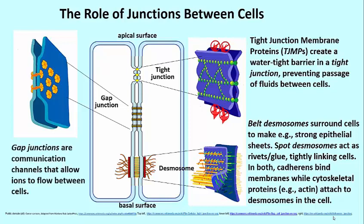On the left is a gap junction. These are actually channels which are very small but will allow — they're hydrophilic and so they will allow ions to flow between cells.